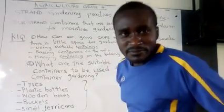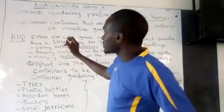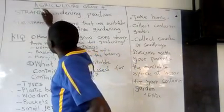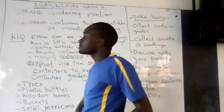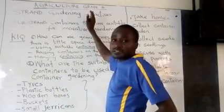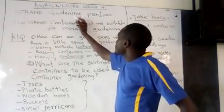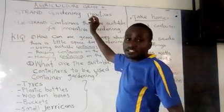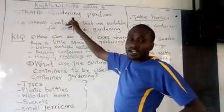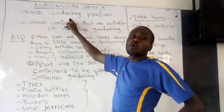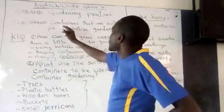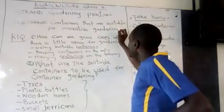Hello learners, welcome to this lesson. We are in Agriculture Grade 4. Our strand is Gardening Practices. Gardening practices are activities which we do in our garden to make our crops grow well. Our substrand is containers that are suitable for innovative gardening — these are locally available containers.